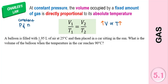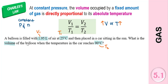We have a balloon filled with 1.95 litres of air at 25 degrees Celsius and then placed in a car sitting in the sun. What is the volume of the balloon when the temperature in the car reaches 90 degrees Celsius? We have two different temperatures, so we are going to have two different volumes. I label the first volume as V1, and its corresponding temperature as T1. The second temperature becomes T2, and the volume we need to find is V2.